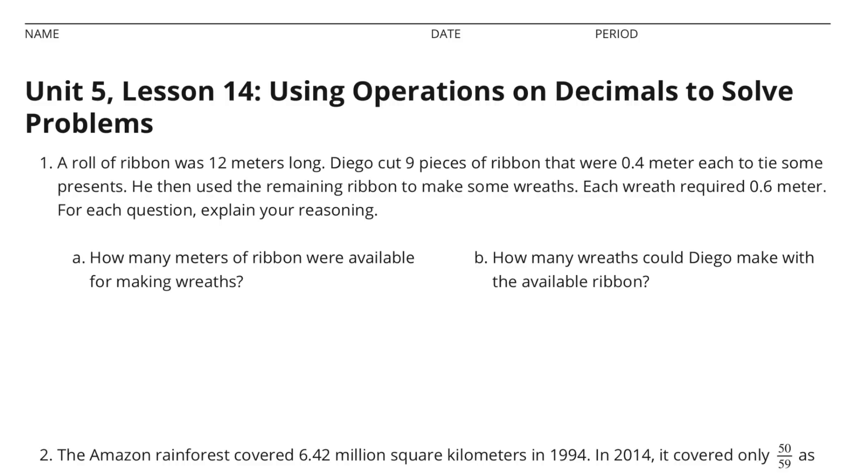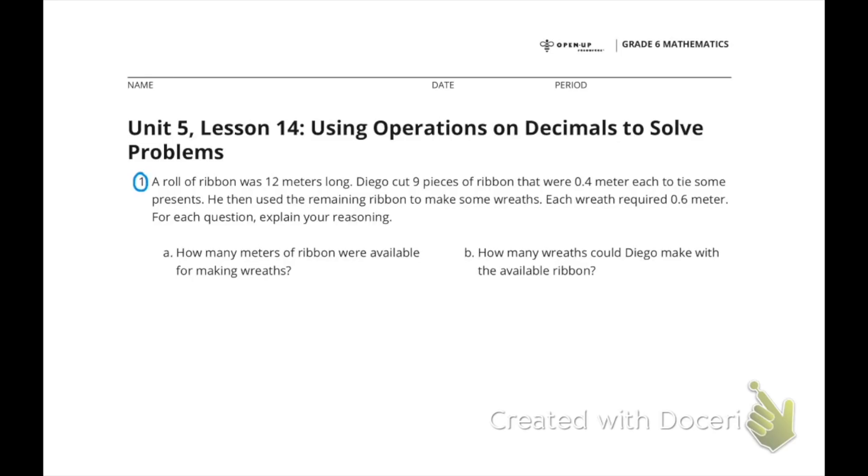Unit 5 Lesson 14: Using Operations on Decimals to Solve Problems. Number 1: A roll of ribbon was 12 meters long. Diego cut 9 pieces of ribbon that were 0.4 meter each to tie some presents. He then used the remaining ribbon to make some wreaths. Each wreath required 0.6 meter. For each question, explain your reasoning. A: How many meters of ribbon were available for making wreaths?